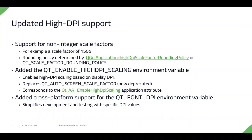When rounding is needed, there is now a new rounding policy API where you can set how rounding should happen. We've also added a new QT_ENABLE_HIGHDPI_SCALING environment variable that does scaling based on display DPI, replacing the now-deprecated QT_AUTO_SCREEN_SCALE_FACTOR. Finally, we've added cross-platform support for the QT_FONT_DPI environment variable to help simplify development and testing by emulating specific DPI values on all platforms.